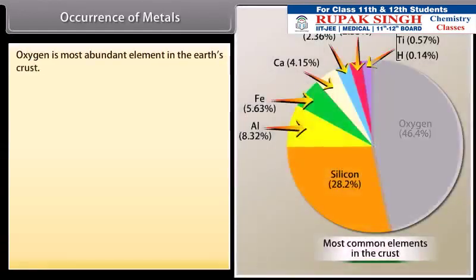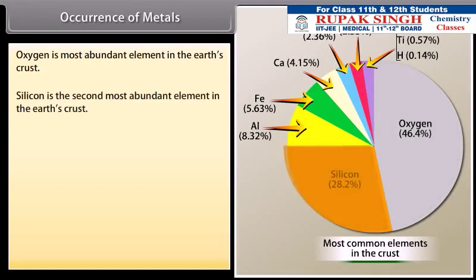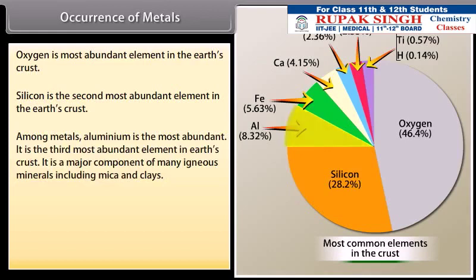Occurrence of metals. Oxygen is most abundant element in the earth's crust. Silicon is the second most abundant element in the earth's crust. Among metals, aluminium is the most abundant. It is the third most abundant element in earth's crust. It is a major component of many igneous minerals including mica and clay. Many gemstones are impure forms of Al2O3 and the impurities range from chromium to copper.